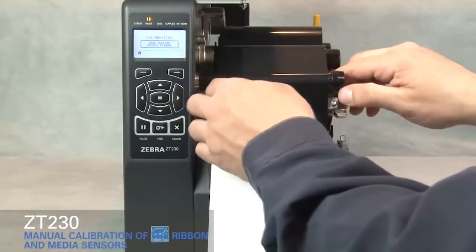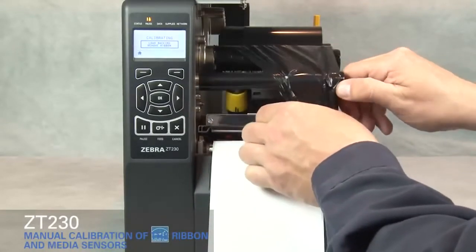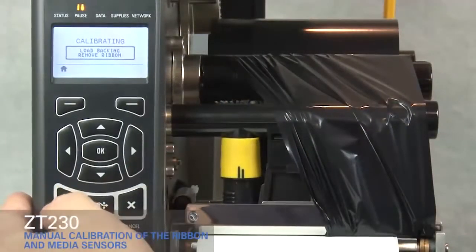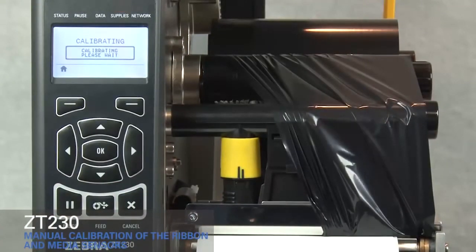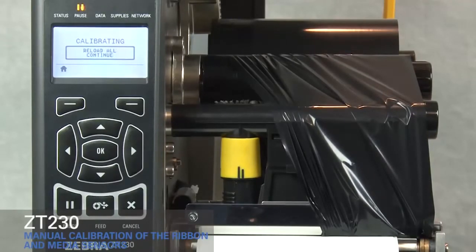Move ribbon to the right away from the sensors. Close the print head. Press pause to begin media calibration. The display shows calibrating. Please wait. Wait until the process is complete and the display changes to reload all.